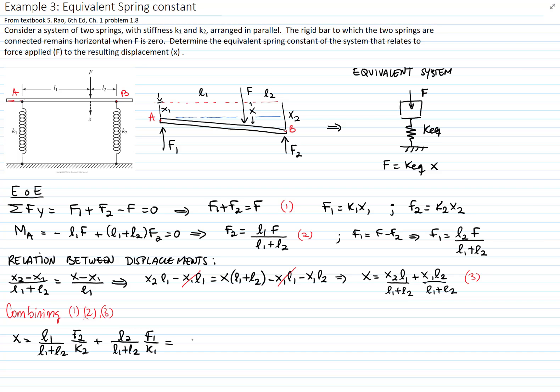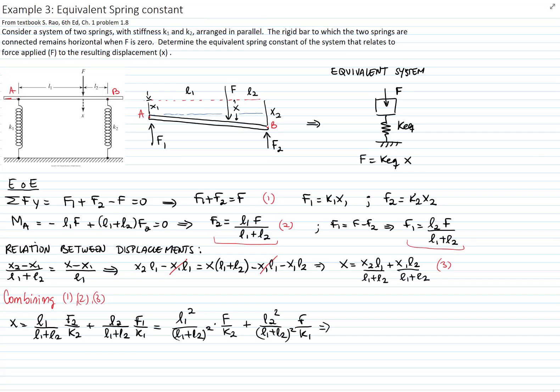Now I can further substitute F2 by the expression that is related to F. So I will have L1 over F2. As you see, L1 becomes squared and the denominator is also squared, and I have F over K2. Now I will do the same with the next term. Those become squared and I have F over K1.